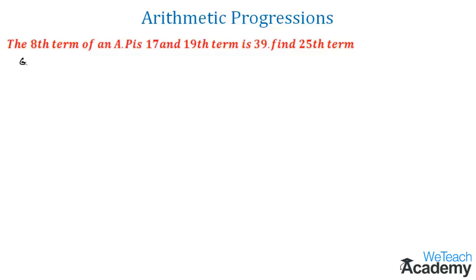We already know the general term of the arithmetic progression is given by a plus (n minus 1) times d. Using this formula, let us find the 25th term. For that, we have two conditions given.